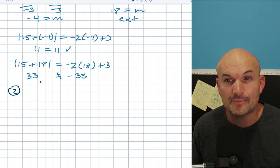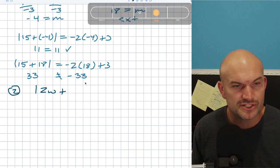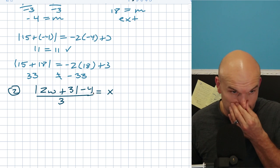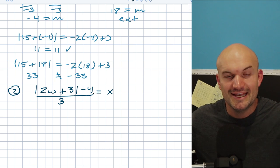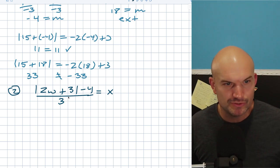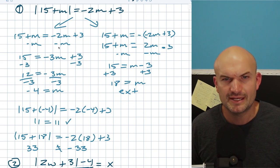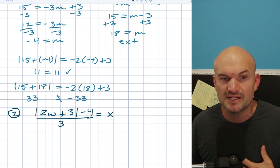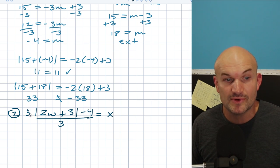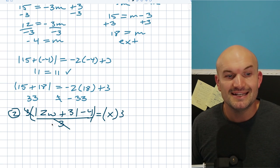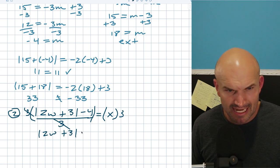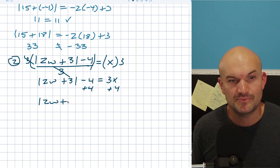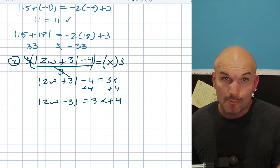What if we have another equation with some inverse operations? Let's say we have the absolute value of 2W plus 3, minus 4, all over 3, equals X. The first thing we always have to do before creating our positive and negative cases is isolate the absolute value. We need to undo division first since everything is being divided by 3 — so multiply both sides by 3. That gives us absolute value of 2W plus 3, minus 4 equals 3X. Then add 4 to both sides to get absolute value of 2W plus 3 equals 3X plus 4. Now the absolute value is isolated.